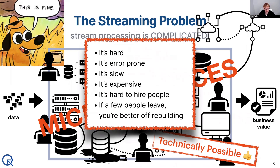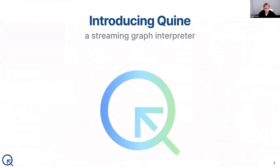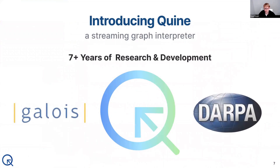We've grown accustomed to the fact that this is just what we have to live with. Well, Quine is aimed at this problem — to make this situation better. Quine is a streaming graph interpreter that is the result of more than seven years of DARPA-funded research and development. Our team has been at this for a long time, and it is a fundamental new technology for streaming data pipelines and machine learning applications.